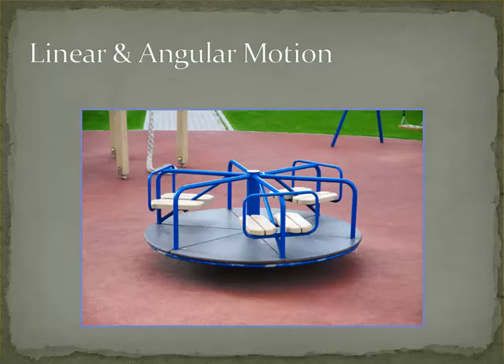Hopefully you remember from when you were a kid that that linear motion, the speed, feels greater the further away from that radius that you are. So the angular motion is the spinning of the merry-go-round. The linear motion is what your body feels as you increase that radius.